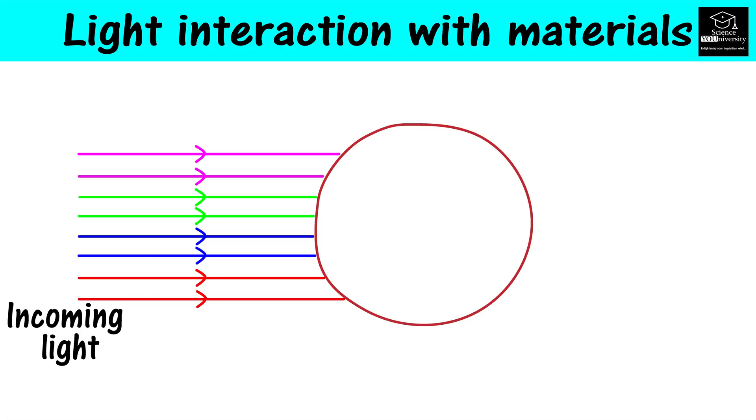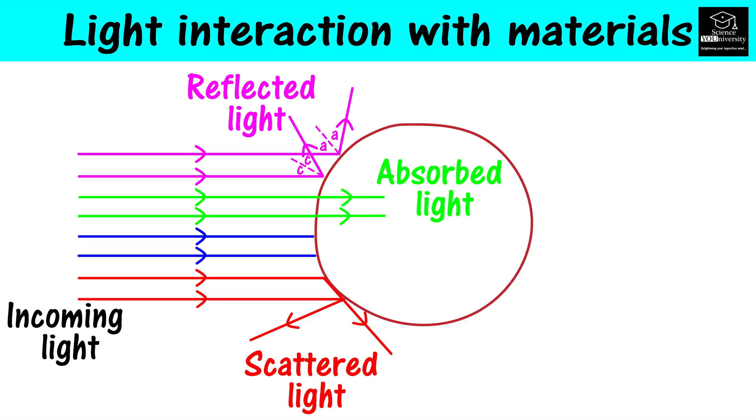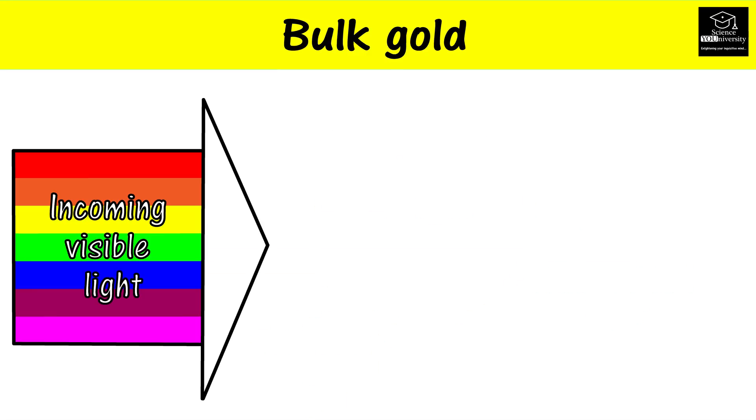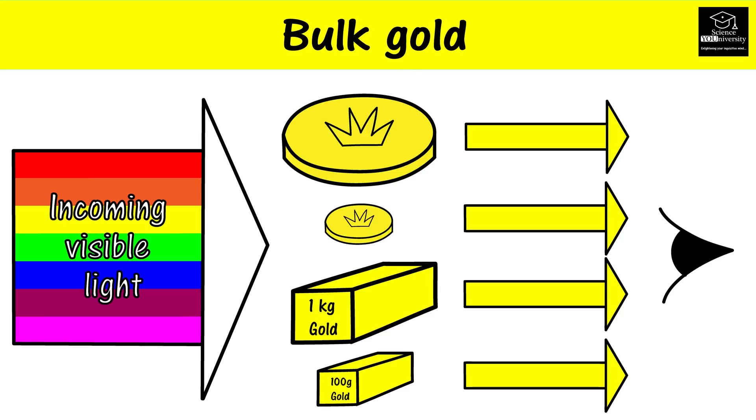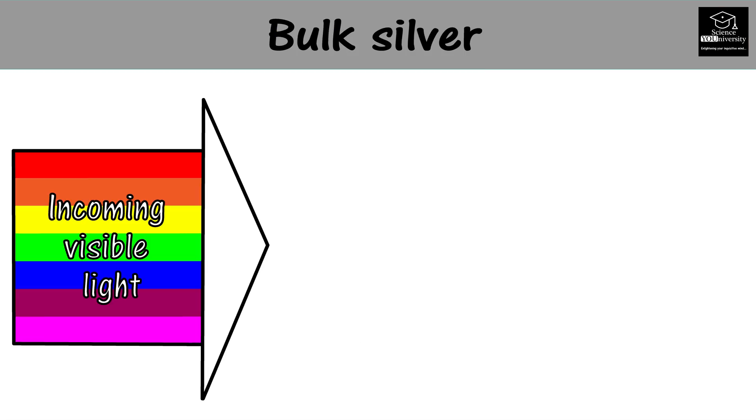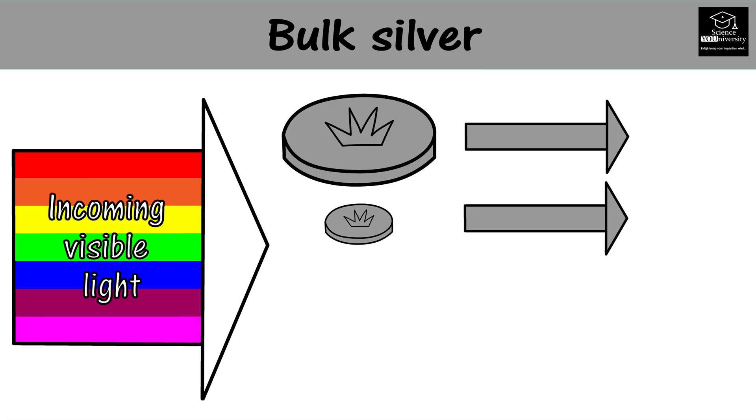When light interacts with bulk materials, the amount of reflected, scattered, absorbed, and transmitted light decides the color we see, and it's unique to the material itself. For example, if you have several gold coins and bars with different sizes, all of them will be gold in color. Similarly, if you have several silver coins and bars with different sizes, all of them will be silver in color.